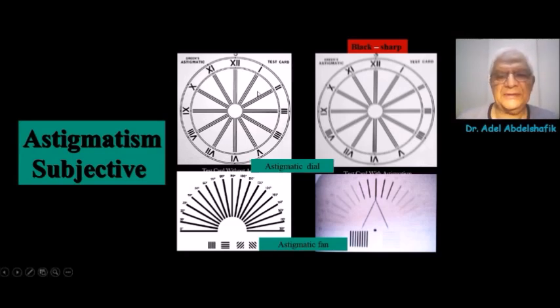Patient is presented with the astigmatic dial or astigmatic fan. This is what might be seen by a patient. We're going to ask the patient, would you identify the black and the sharp line?